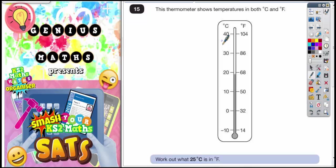So 40 degrees C is the same as 104 degrees F. 30 degrees C is the same as 86 degrees F. 20 degrees C is 68 degrees F and so on. What we've got to do is work out what 25 degrees C is in Fahrenheit.